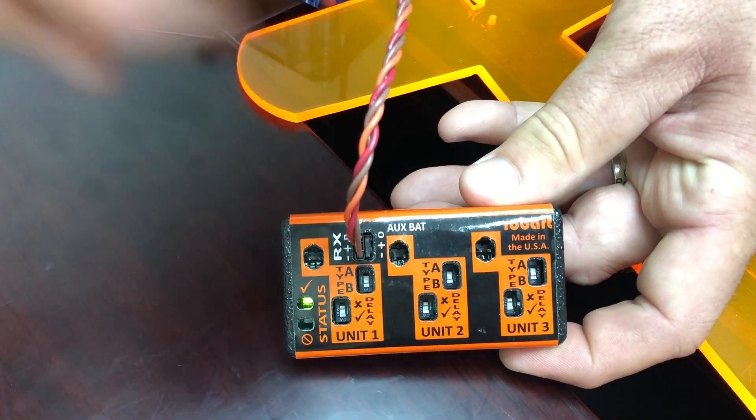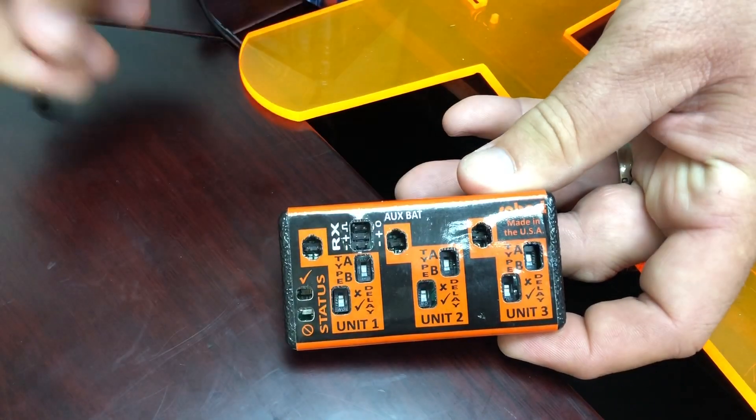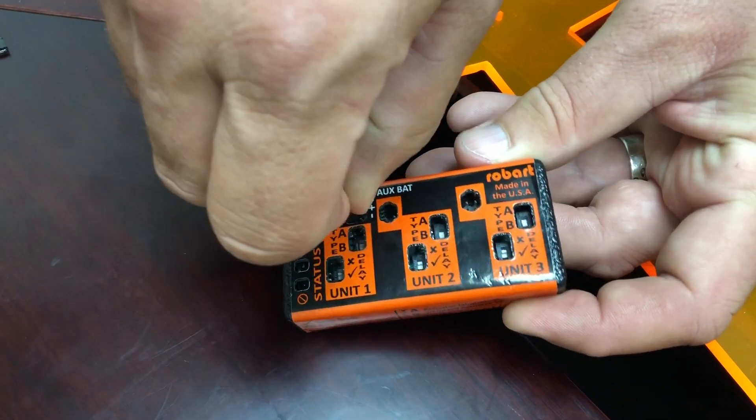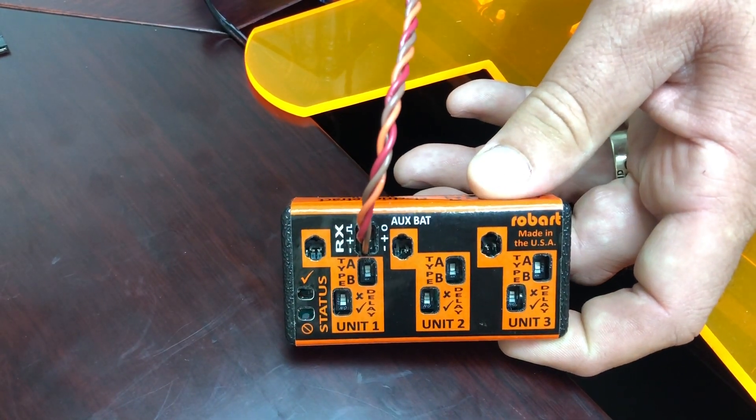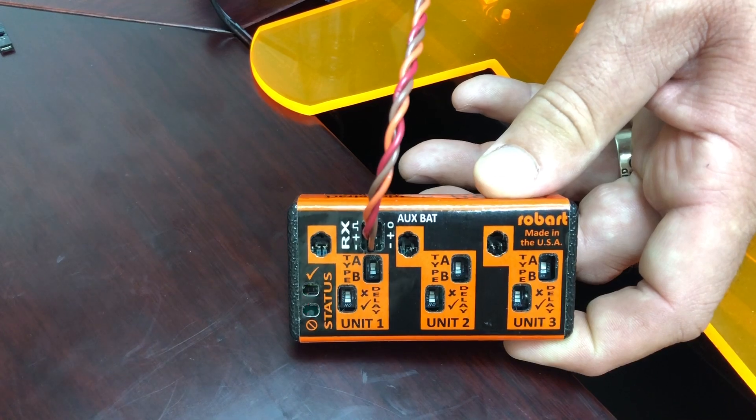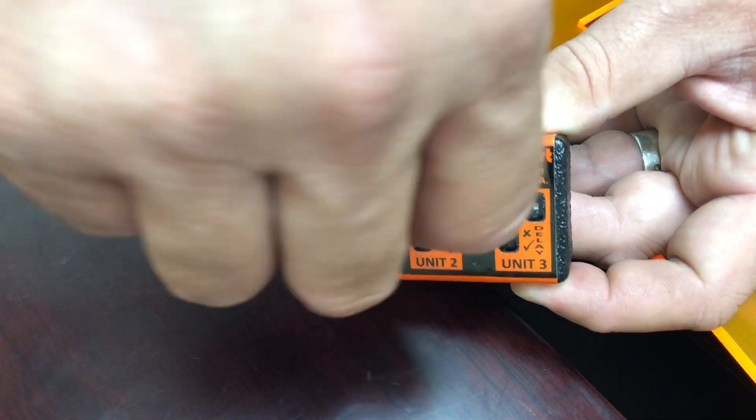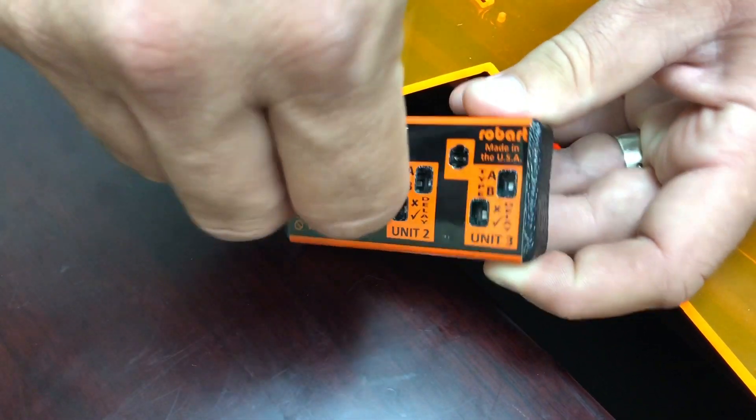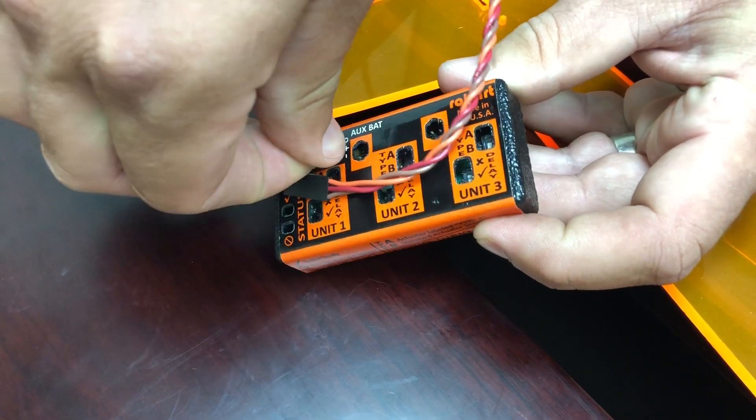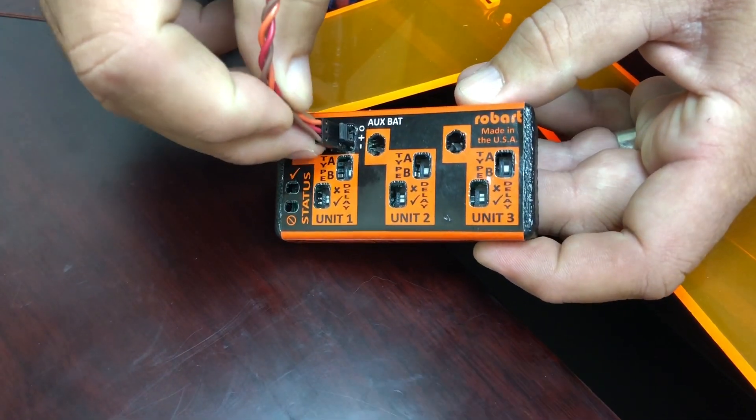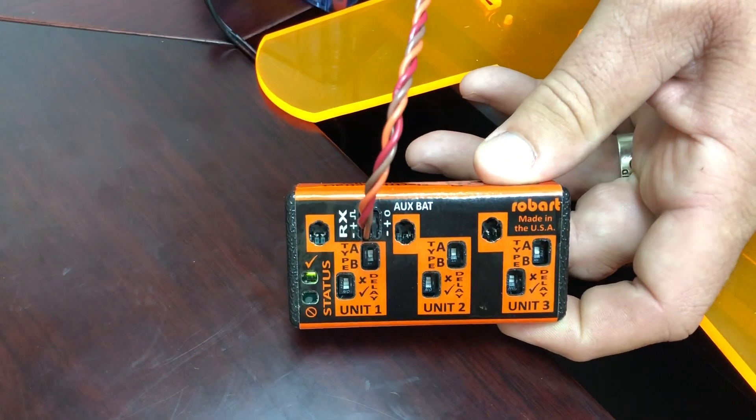And then also the last one is if you forget your jumper and you just try to run this on its own without any connection in there, then you will have a blinking red and green light. So I'm going to plug that back in. Solid green light.